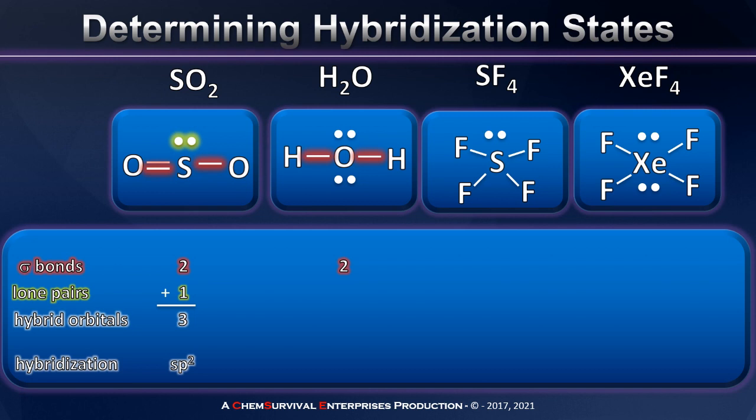Looking at water, we also have two sigma bonds, but in this case the central atom now has two lone pairs of electrons, for a total of four hybrid orbitals. This means I need to use four atomic orbitals to create them, and the recipe for that is SP3.